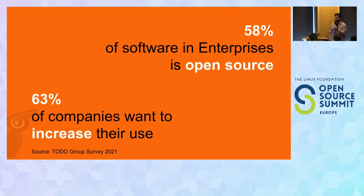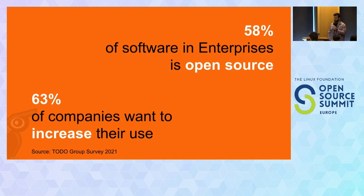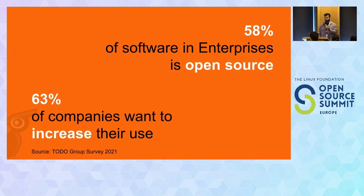Collaborative software development has taken on a new dimension in the last five to ten years. Today, open source makes up 58% of software in the enterprise. And in fact, 63% of companies in a 2021 survey indicate that they want to increase their use and engagement with open source.